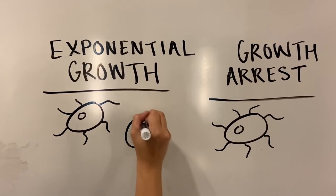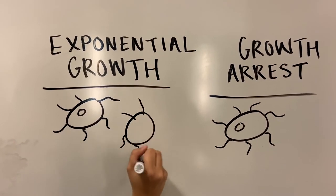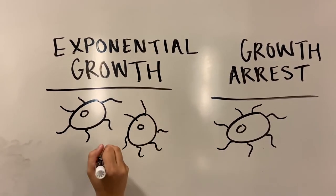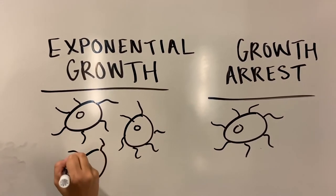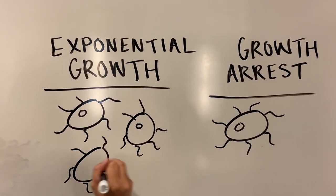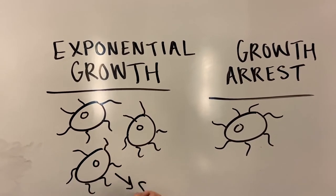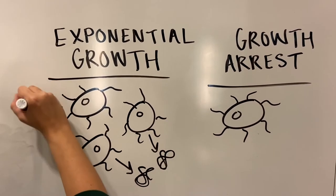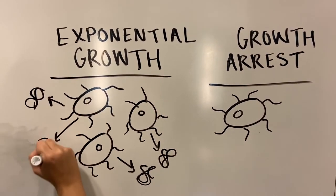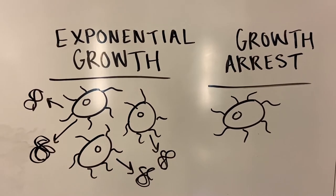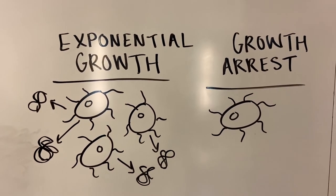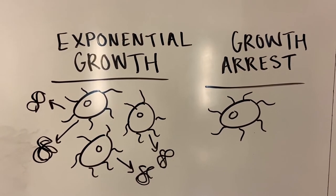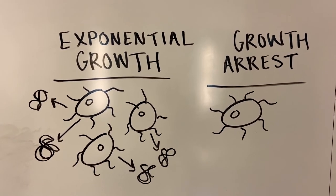In the lab, bacteria often exist in exponential growth, where they express their circuit with ease. However, under the stressors of a natural environment, such as metabolite shortage, bacteria often switch into growth arrest in order to promote their own survival, shutting down the production of most non-essential proteins. This means that even if a chassis performs optimally in the lab, it may not express its circuit at all in the environment.